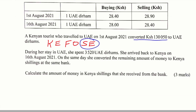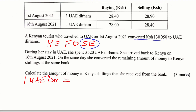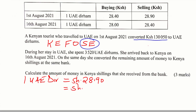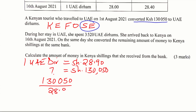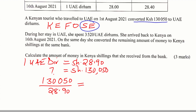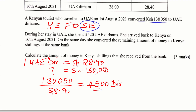We sell, and the rate is 28.90 Kenyan shillings per UAE dirham. So one UAE dirham sells at 28.90 Kenyan shillings. To find how many dirhams 130,050 shillings gives us, we divide: 130,050 divided by 28.90. Working this out on a calculator gives 4,500 UAE dirhams. That is the amount of money she obtained in dirhams.